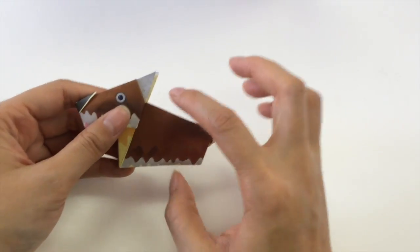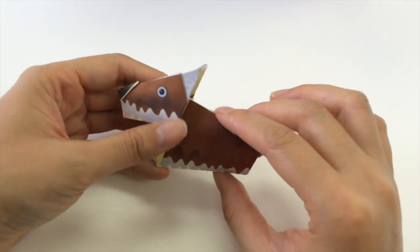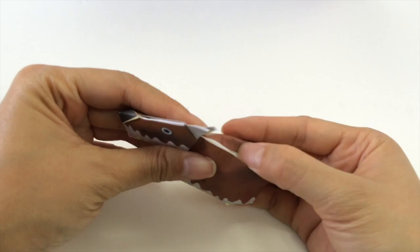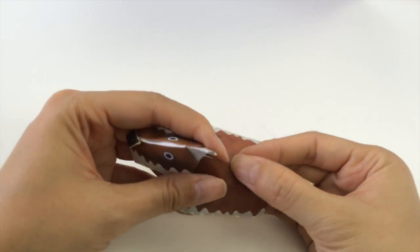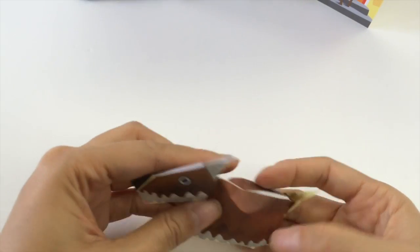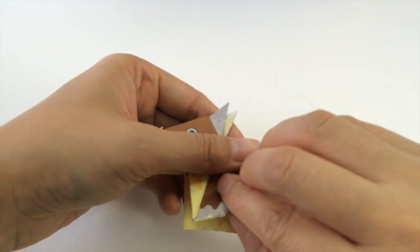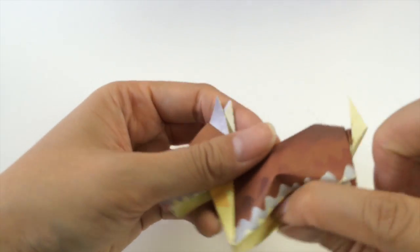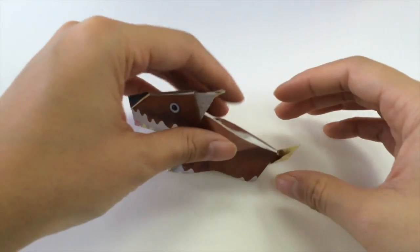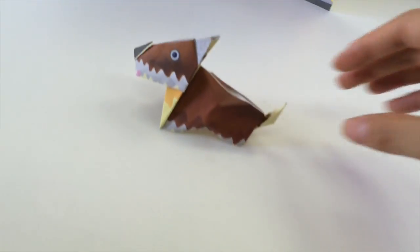And your little dog is finished. And if you would like to, you can give it a bit more shape by pressing along the back so that it indents a little. And also along the bottom, you can indent it a little so that it has a bit more of a 3D shape.